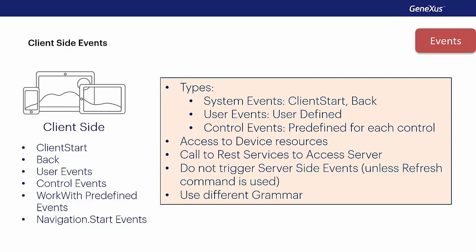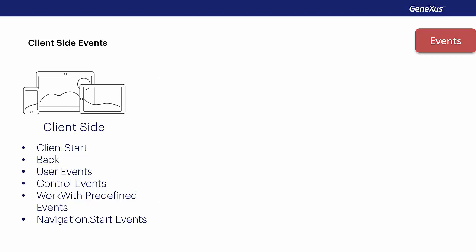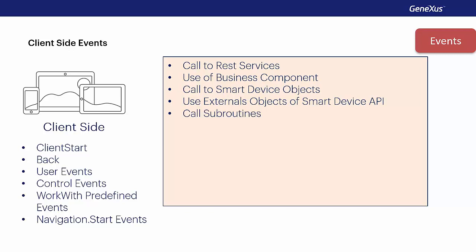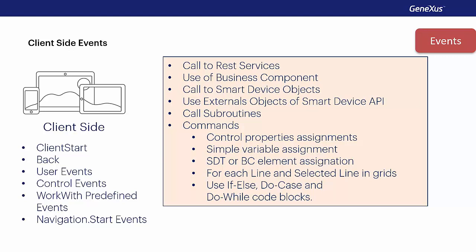What can we do in an event on the client side? We can call REST services — when we call procedures or data providers, they will be automatically exposed as REST services. We can use business components to recover or update information, and those will also be exposed as REST services automatically. We can call any other object for smart devices, like nodes of the work-with, panels, or menu for smart devices. We can use the external objects of the smart device API, call subroutines, and use the following commands: assignment of properties to controls, assignment of simple variables, use of business component or SDT variables, execution of for-each-line and for-each-selected-line in grids, and use of if-else, do-case, and do-while blocks.